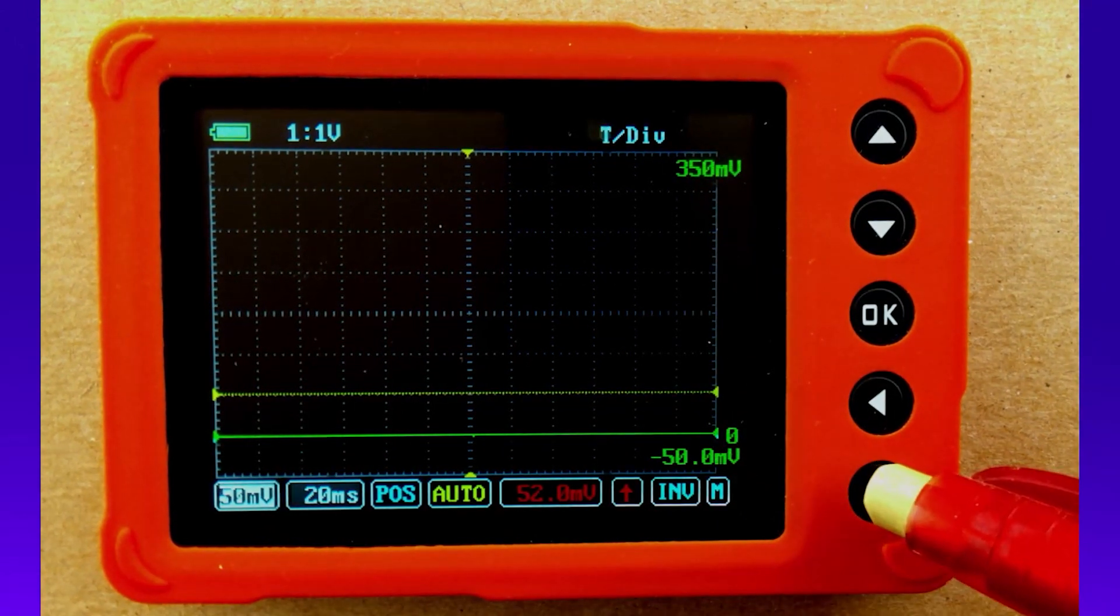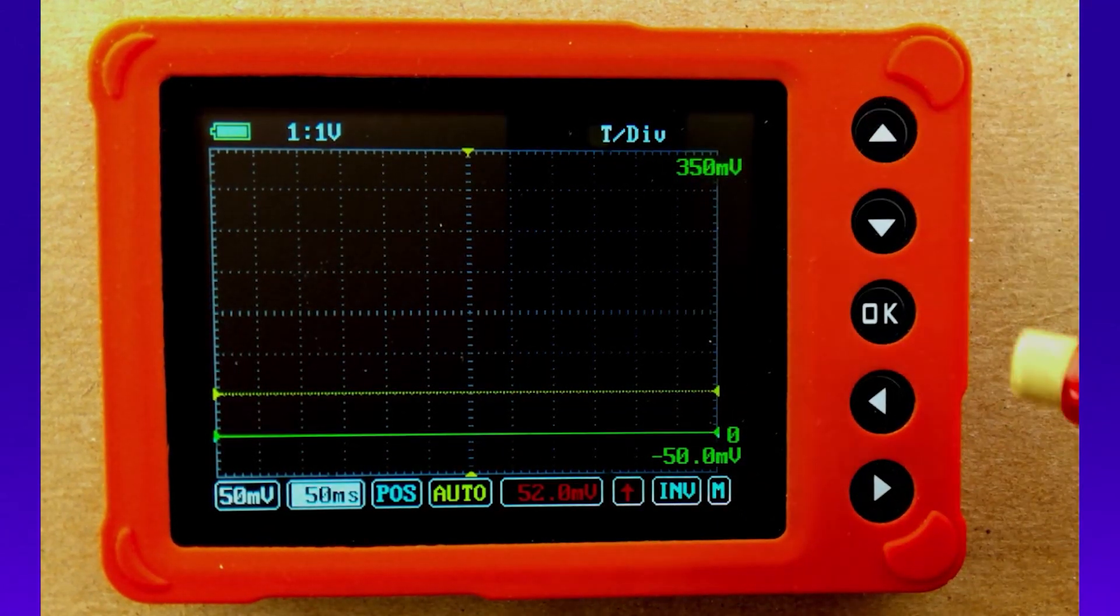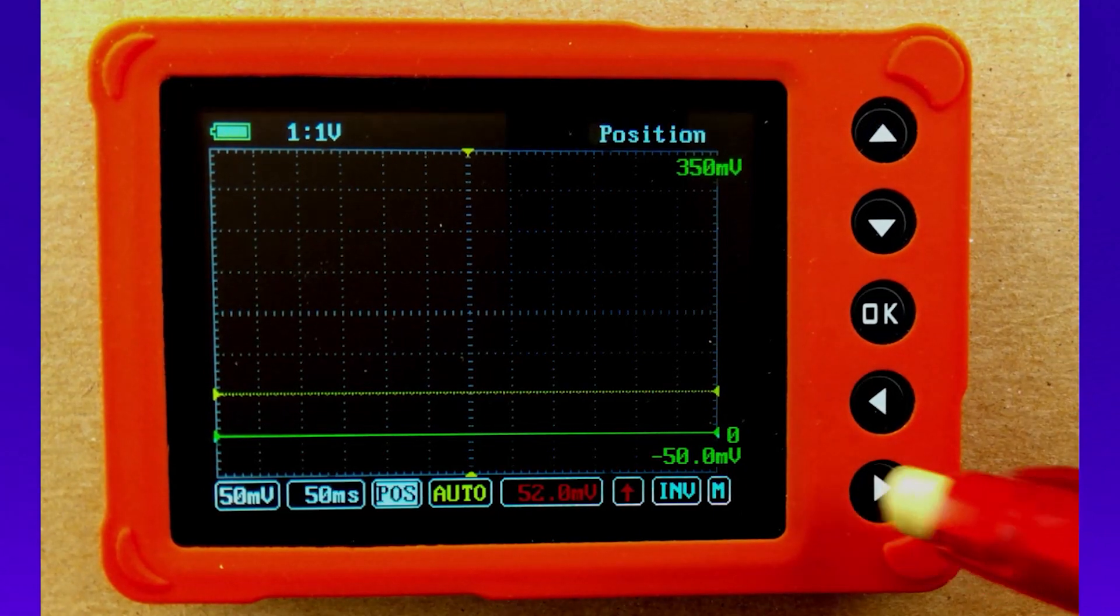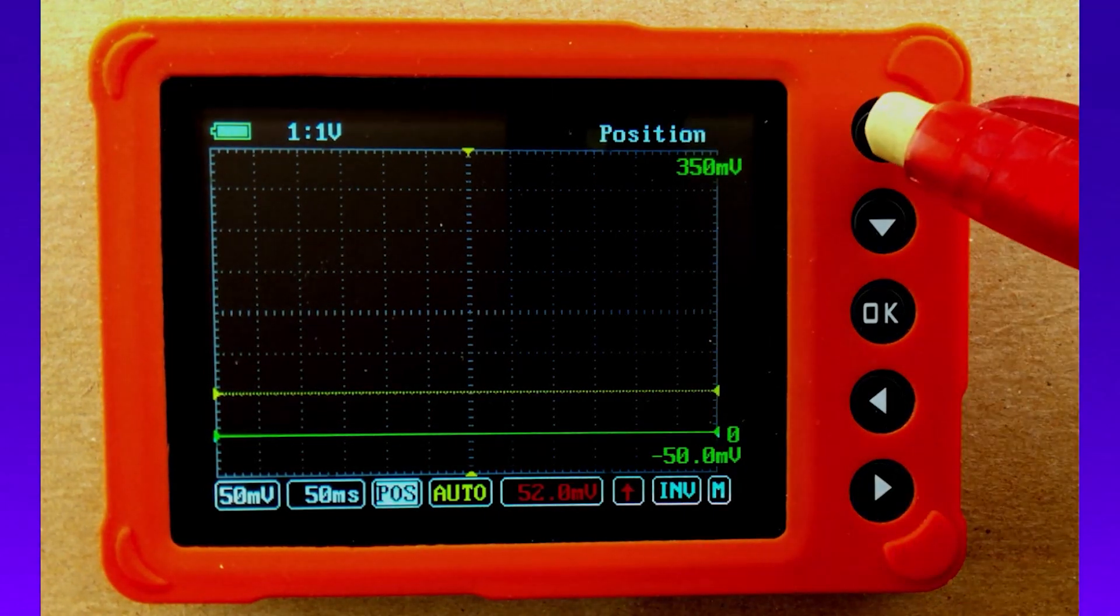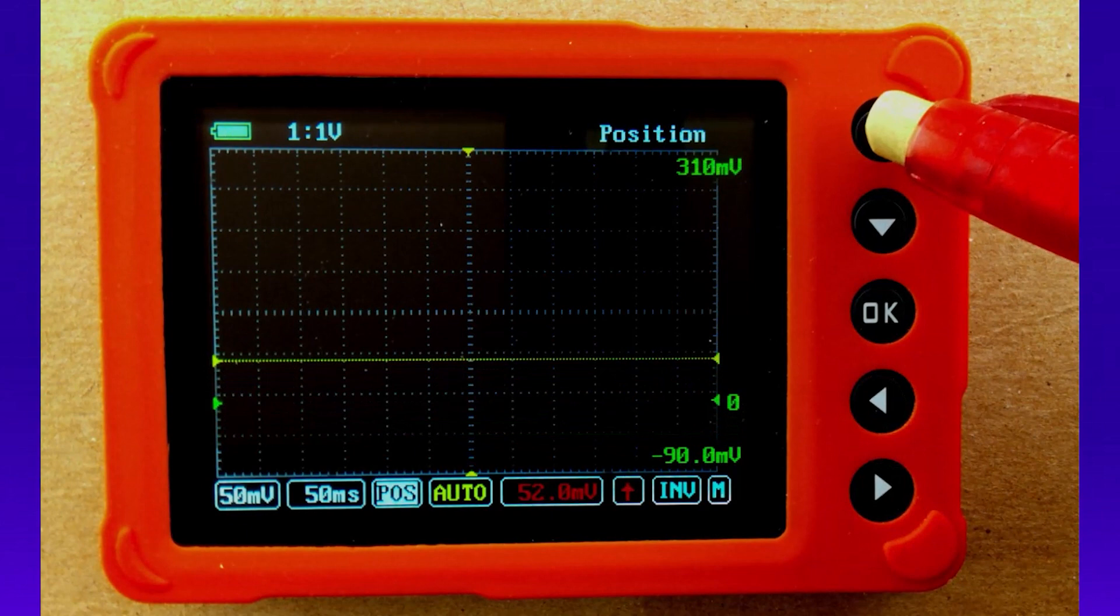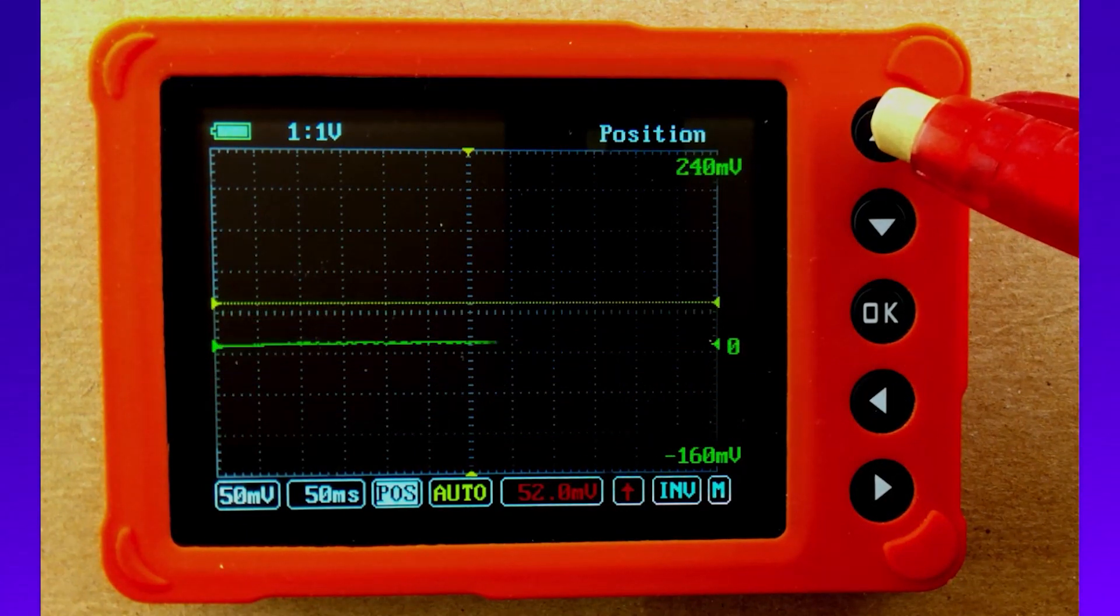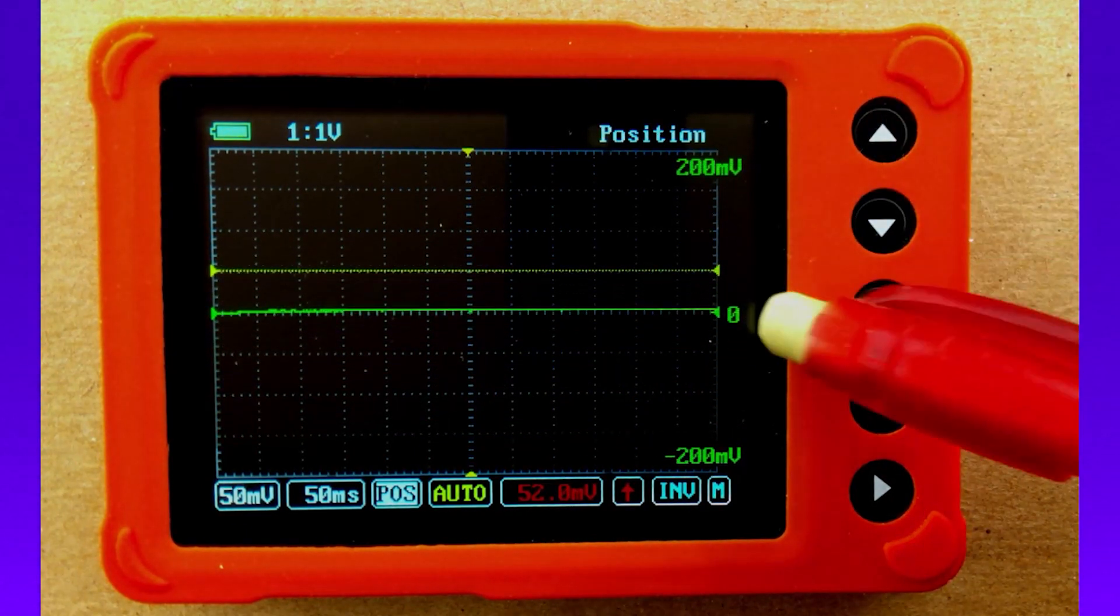Then we're going to set our time over to 50 milliseconds. And then our position, we want to take our position up to the center of the screen. So let's go ahead and move our zero position right there to the center of the screen.